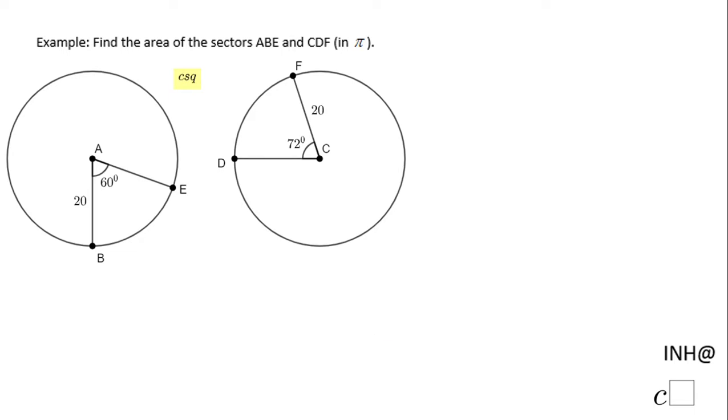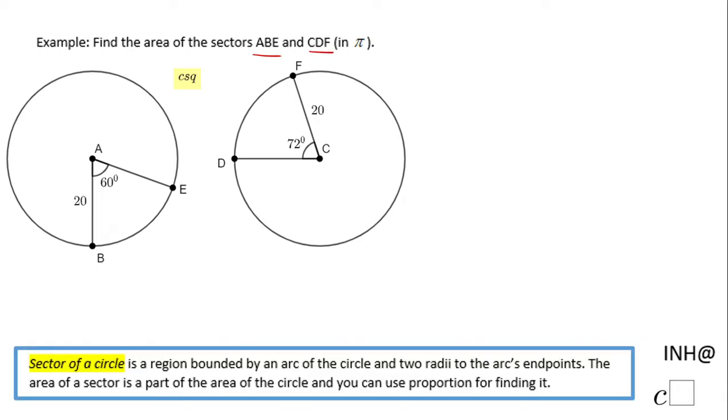Welcome or welcome back to I Need Help at C Square. In this example we need to find the area of the sector ABE and the area of the sector CDF, and we keep the answer in pi. Notice here I tell you the definition of the sector of a circle. This is sector ABE and this is the sector CDF. So how do I find the area of these two sectors?